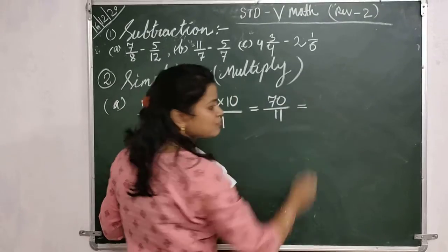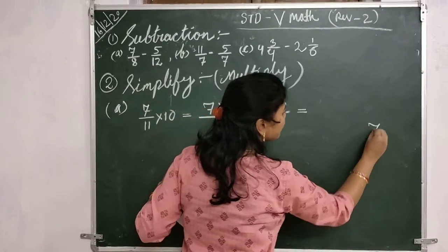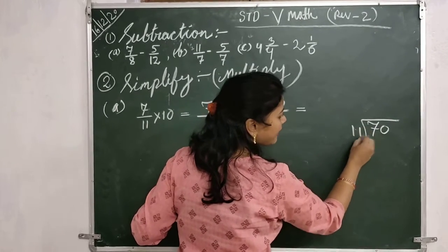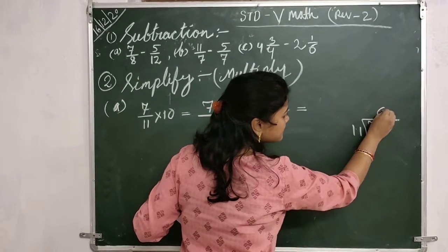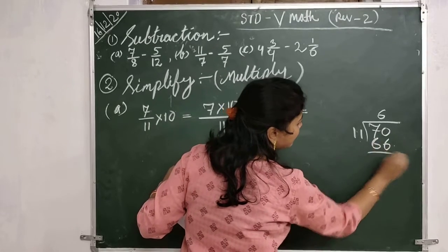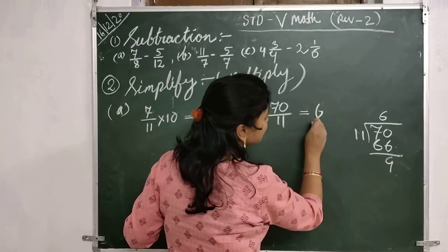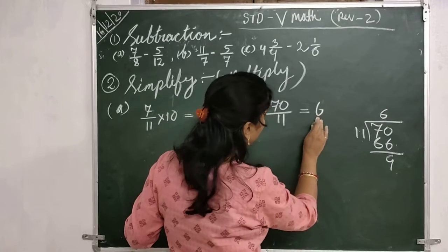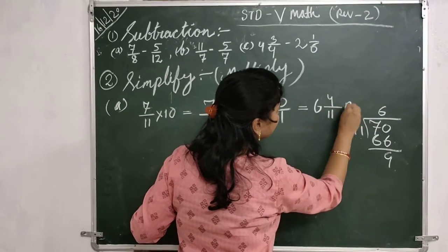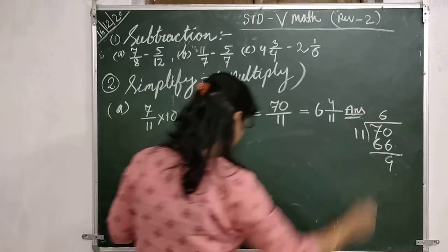Again I will change it to a mixed fraction. Here 70 divided by 11: 11 times 6 is 66, and here 4 remaining. So the answer will be 6 whole 4 by 11.